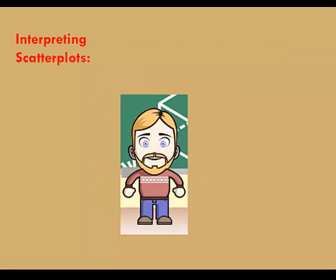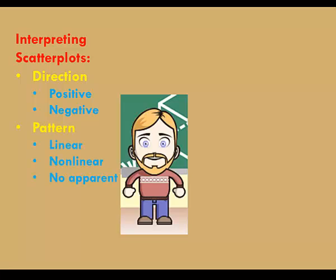In this video, we've learned about interpreting scatter plots. We discussed direction, which can be either positive or negative. Pattern, which could be linear, nonlinear, or no apparent association. And finally, we discussed the strength of linear associations, whether strong or weak.